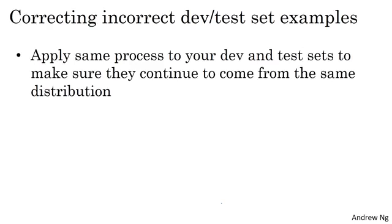The dev set is sort of telling you where to aim the target, and when you hit it, you want that to generalize to the test set. So your team really works more efficiently if the dev and test sets come from the same distribution. So if you're going in to fix up your dev set, I would apply the same process to the test set to make sure that they continue to come from the same distribution. So if you hire someone to examine the labels more carefully, do that for both your dev and test sets.